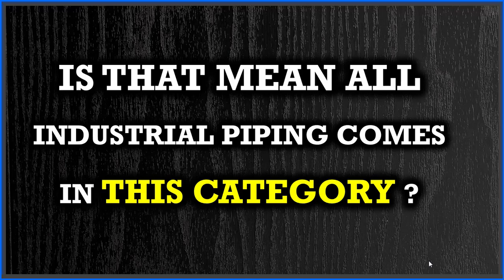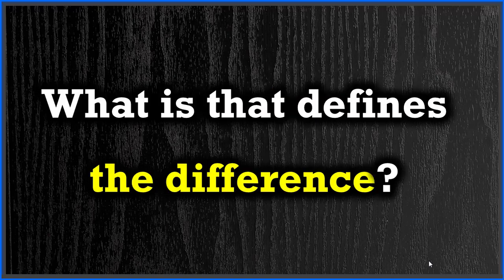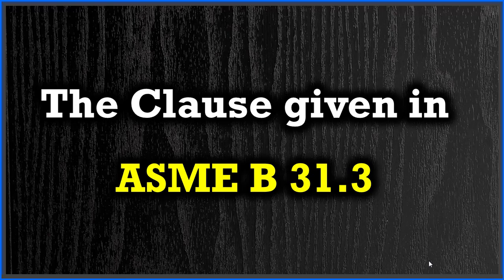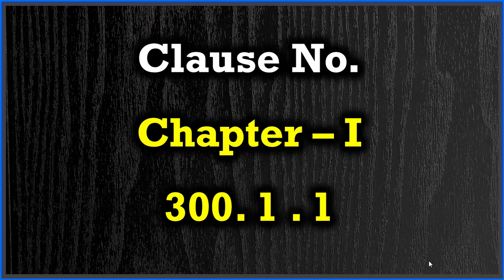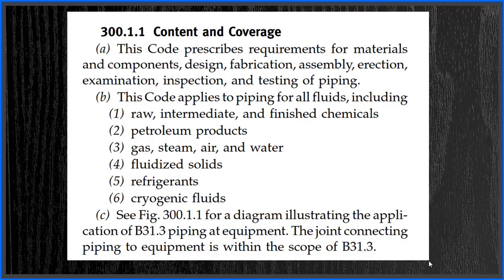Does all industrial piping follow B31.3 only, or is there anything else? When you say process piping, does any standard have a list of categories defining what is process piping and what falls outside it? The answer is no — not all industrial piping is considered process piping. The difference is exactly given in ASME B31.3, clause 300.1.1 in Chapter 1, and that clause covers these definitions with three points: A, B, and C.